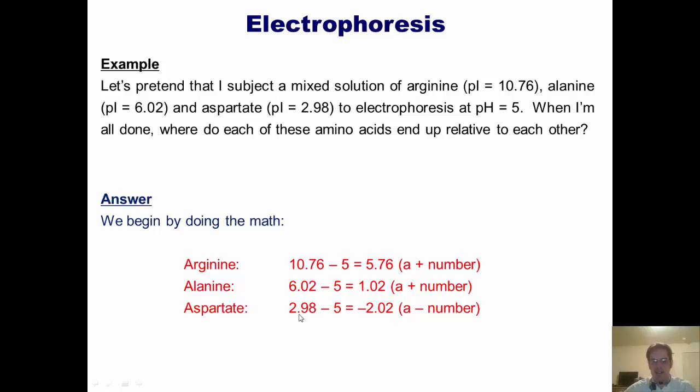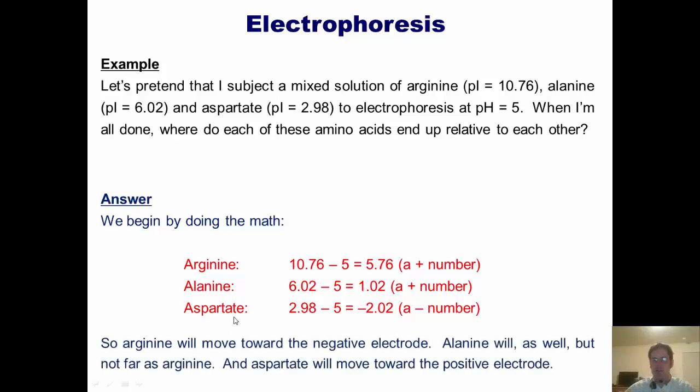Aspartate's pI value is 2.98. I subtract 5, I get negative 2.02, which is obviously a negative number. So what does that mean? It means that aspartate will migrate or be attracted toward the positive electrode. So arginine will move toward the negative electrode. Alanine will as well, but not as far. And aspartate will move toward the positive electrode.